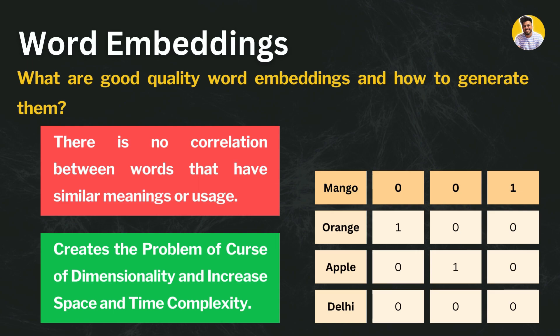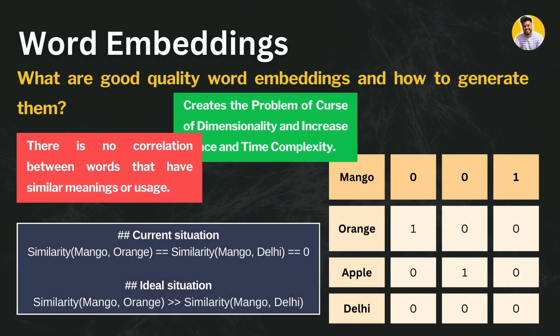In the current situation, mango and orange versus mango and city show no correlation with one-hot encoding. But in the ideal situation, mango and orange would have greater similarity compared to mango and city — and that is what word embeddings aim to capture.